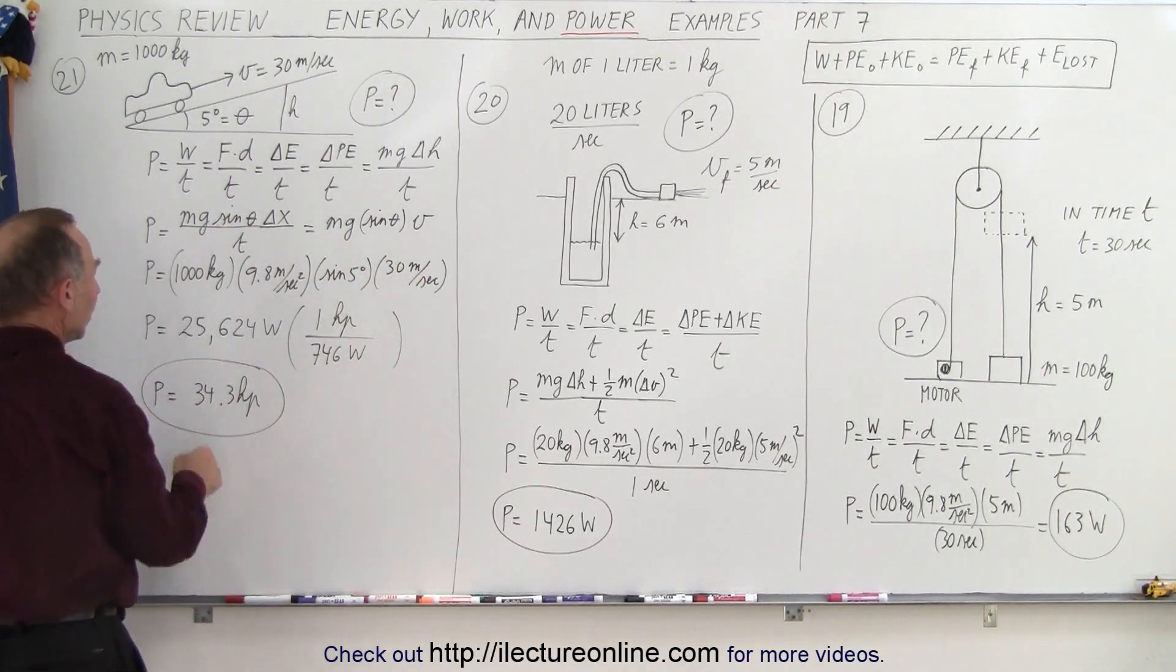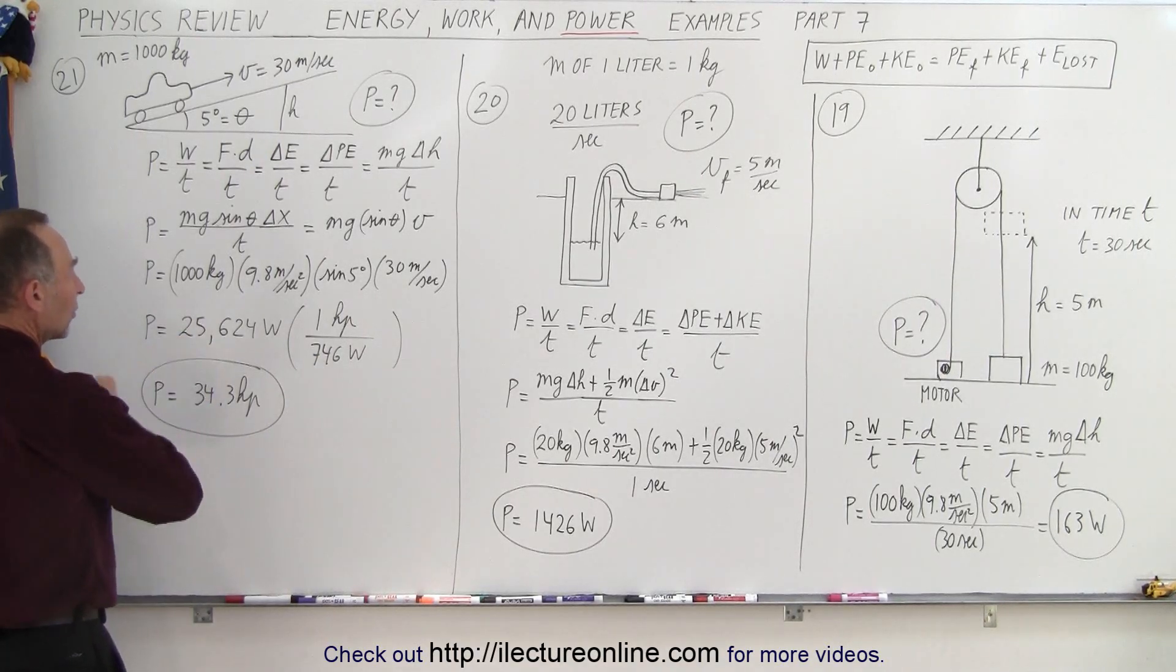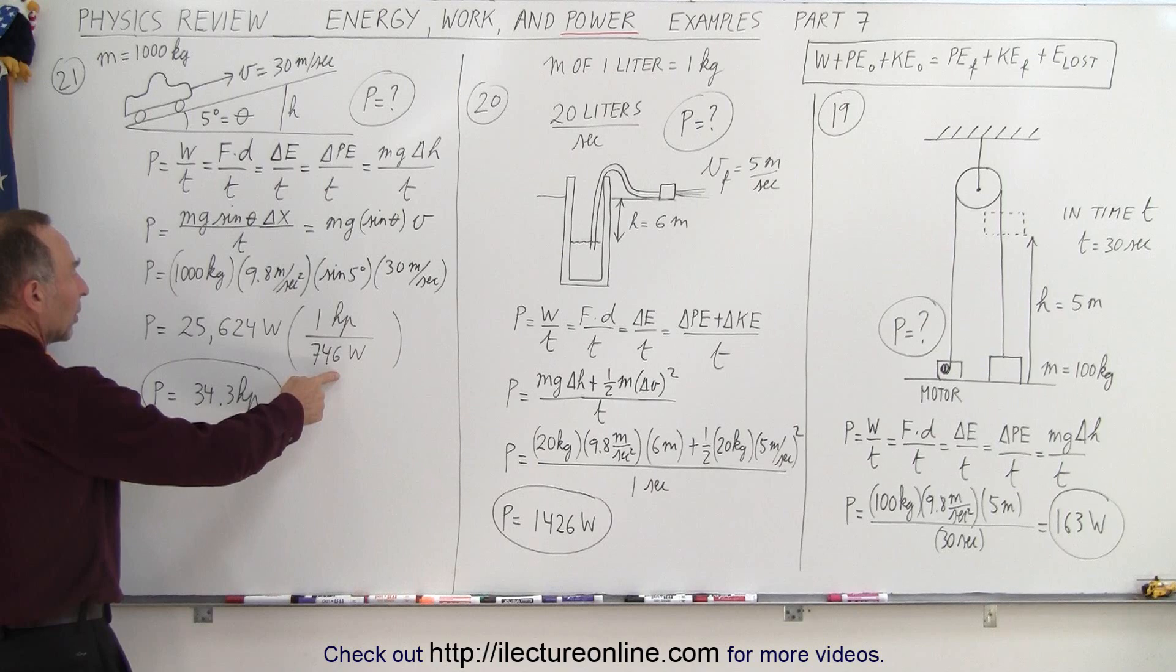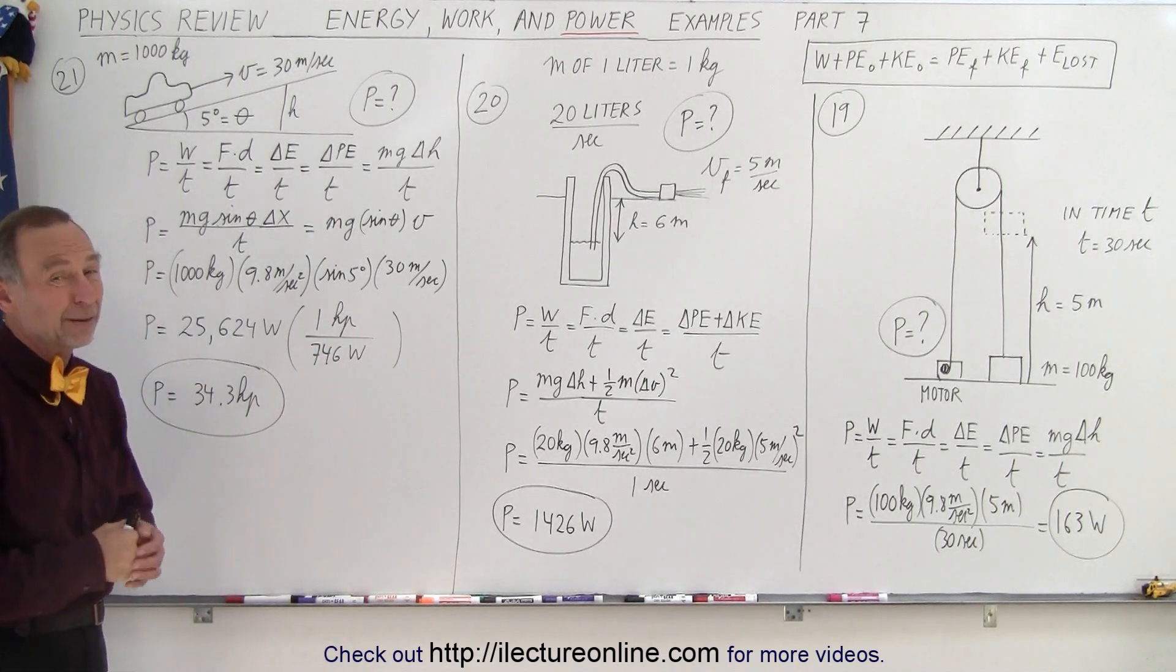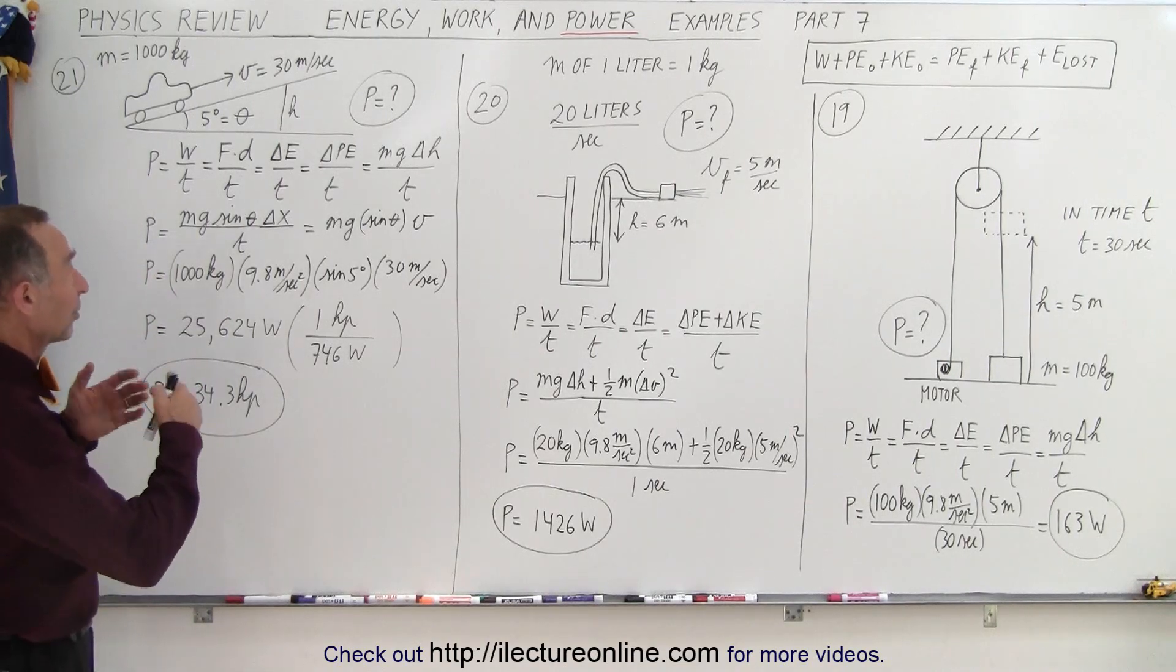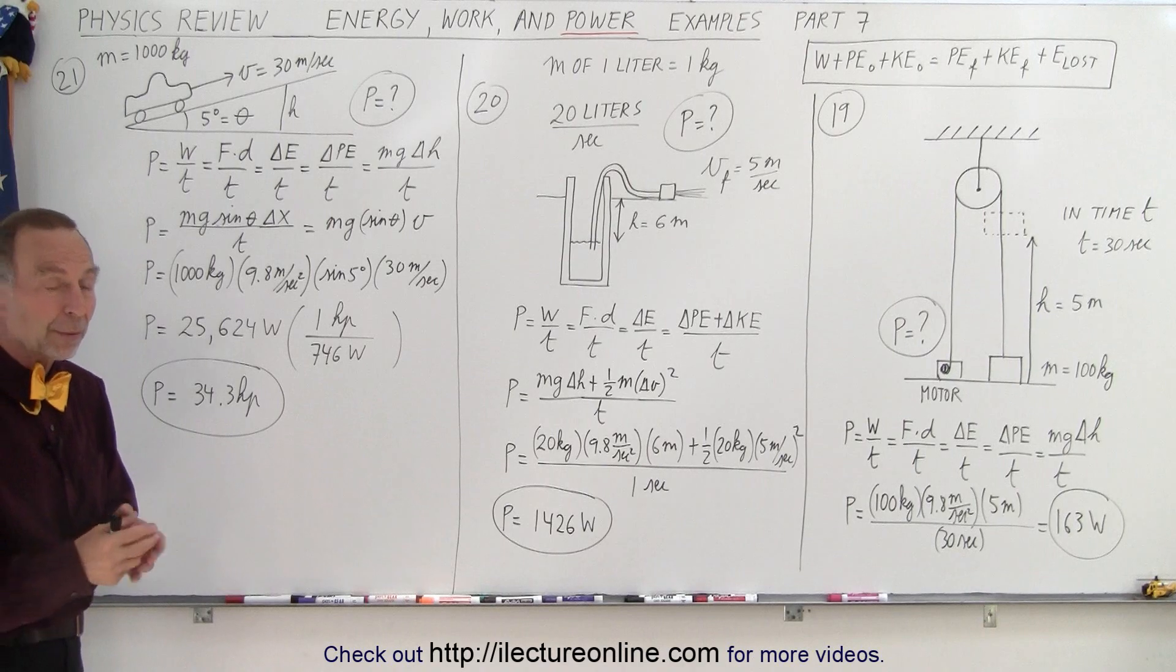And if we plug all those numbers in, we see that it takes a power requirement of a little over 25,000 watts, and if you know that one horsepower is 746 watts, it takes about 34 horsepower. Now obviously a car isn't 100% efficient, so it's going to take a lot more than 34 horsepower.